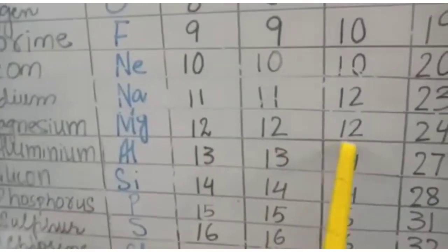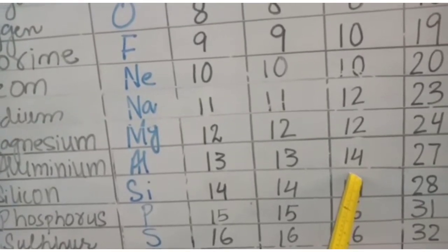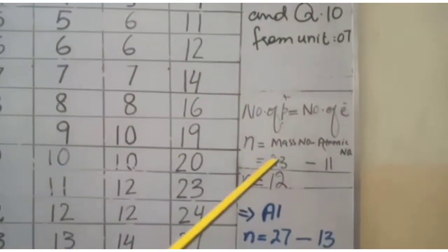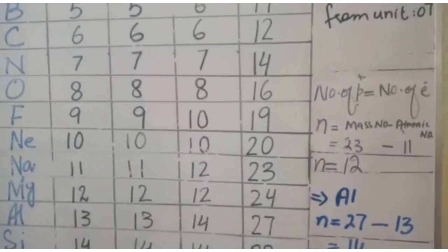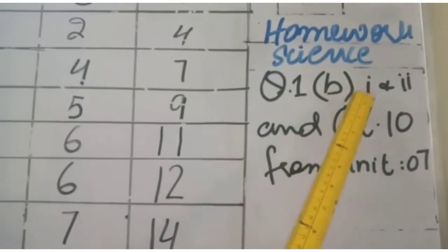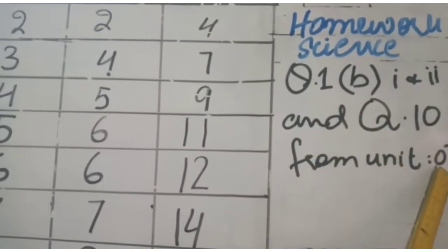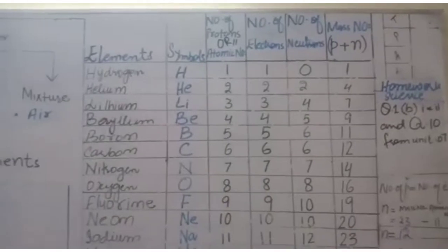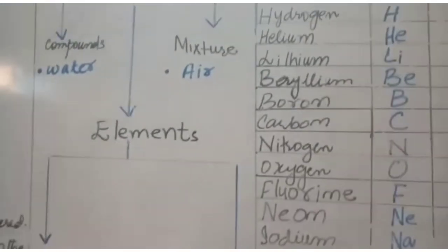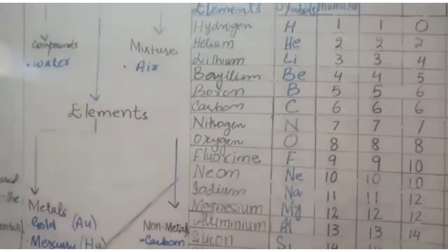Let's verify in the table: sodium — mass number 23, atomic number 11, and number of neutrons is 12. Another example: aluminium — mass number 27, atomic number 13, so 27 minus 13 = 14 neutrons. Check in the table: aluminium has 14 neutrons. This is how you fill both columns — number of electrons equals number of protons, and number of neutrons = mass number minus atomic number.